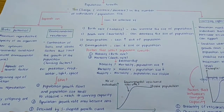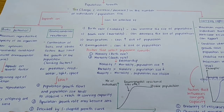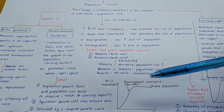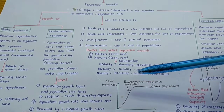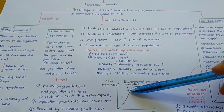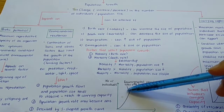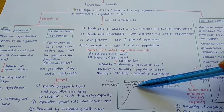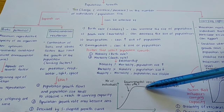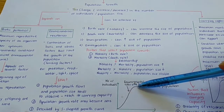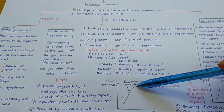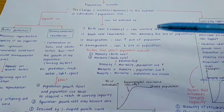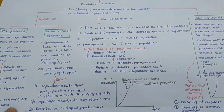Environmental resistance means limiting factors — for example, when food becomes limited. When food is not enough, it will affect the population growth. After that, the population size tends to become stable, and we call this the stationary phase. This stable phase is what we call the carrying capacity.